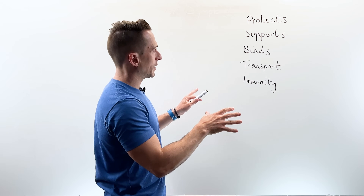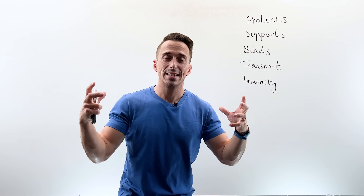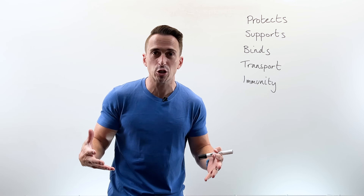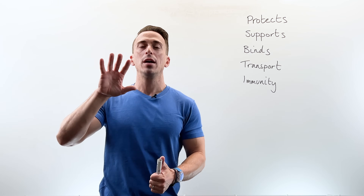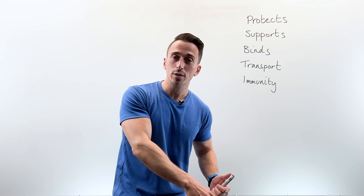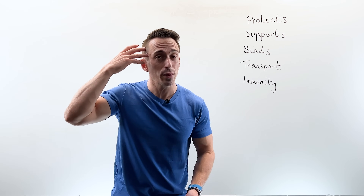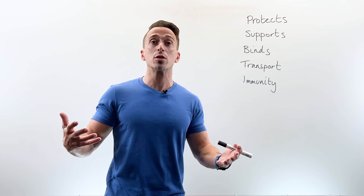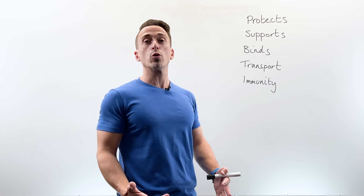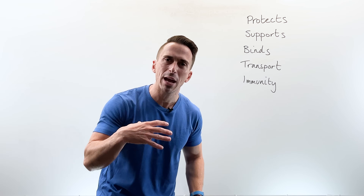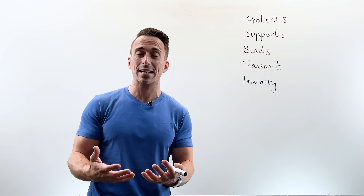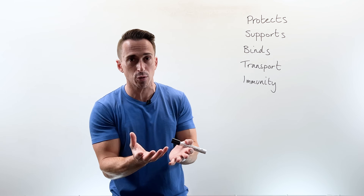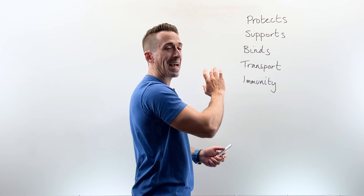I like to put protects and supports together. Connective tissue can protect and support various structures and anatomy within our body. Think of the skeletal system — your bones are connective tissue. You've got a skull that protects your brain, and a rib cage which protects your heart and lungs. Your bony skeleton also supports the weight of your body. Think about the fibrous pericardium that surrounds the heart — it both protects and supports the heart as well.